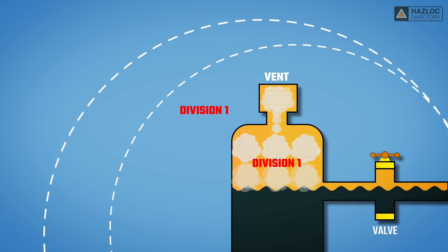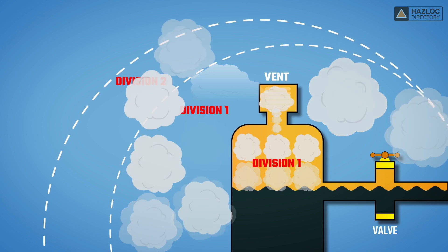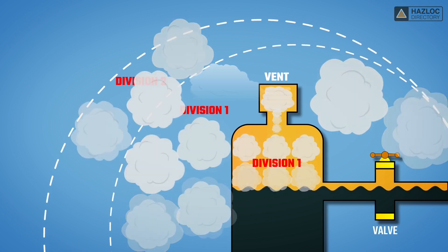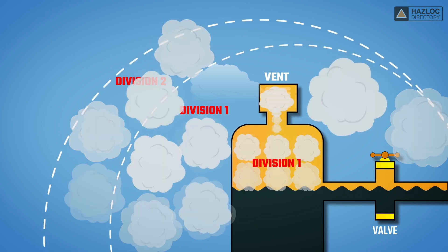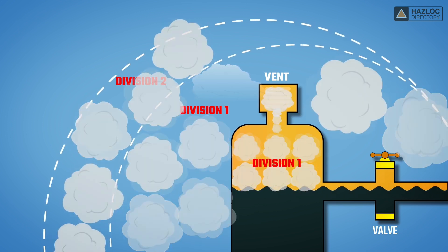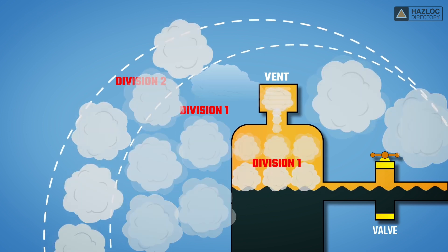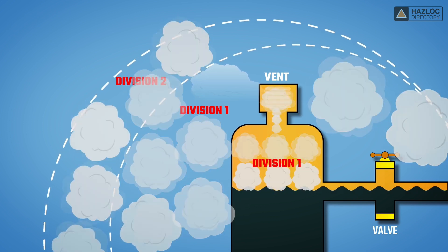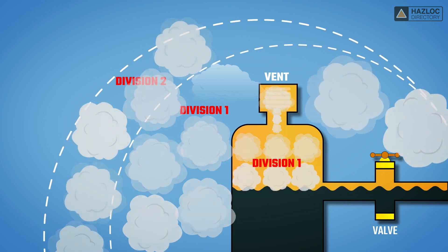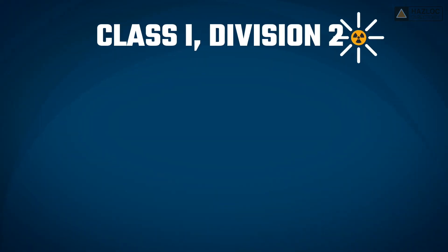This illustration shows a gasoline tank with a fixed roof and vent. We have used this illustration to show both Division 1 and Division 2 locations. Notice that the Division 2 location is outside the storage tank but in the area somewhat removed from the tank's vent. Division 2 also refers to the 3 meters surrounding the tank and the area between the tank and the circular dike around it.